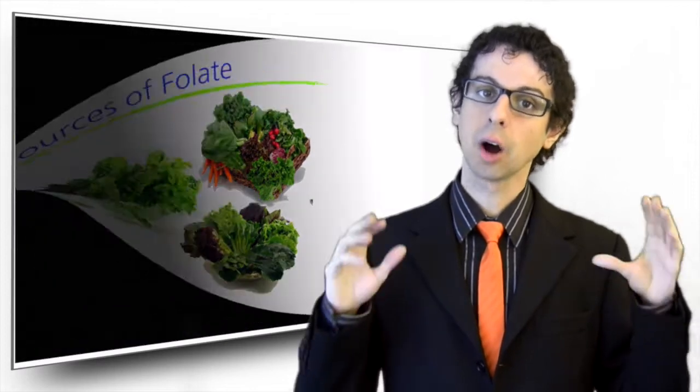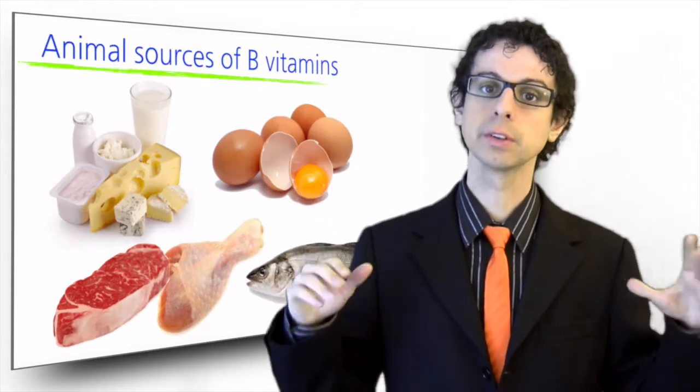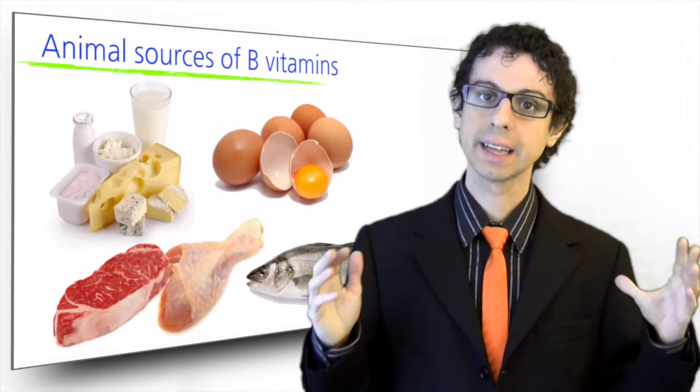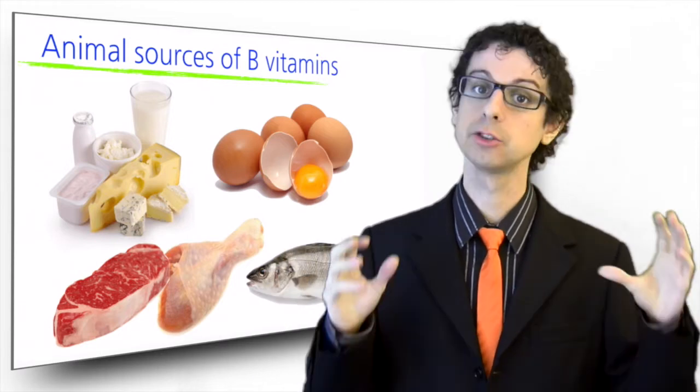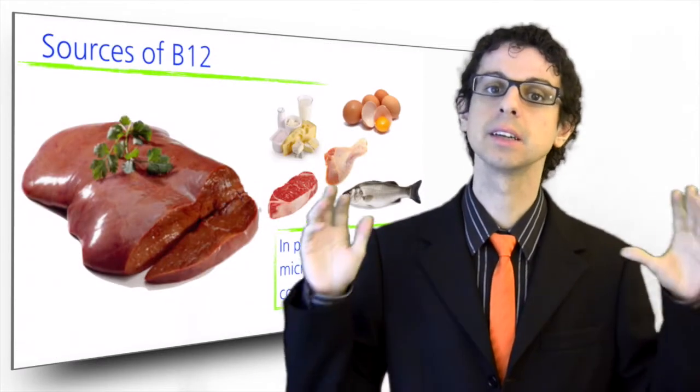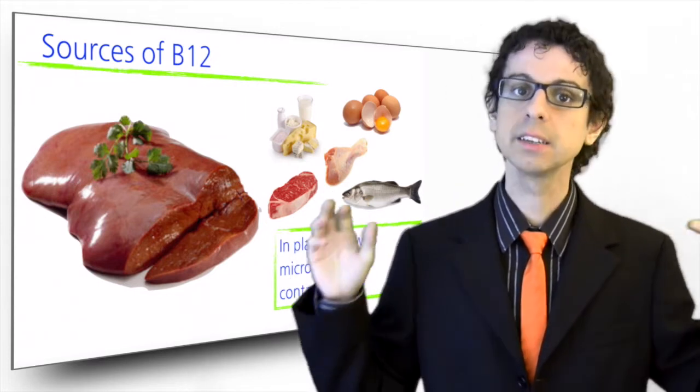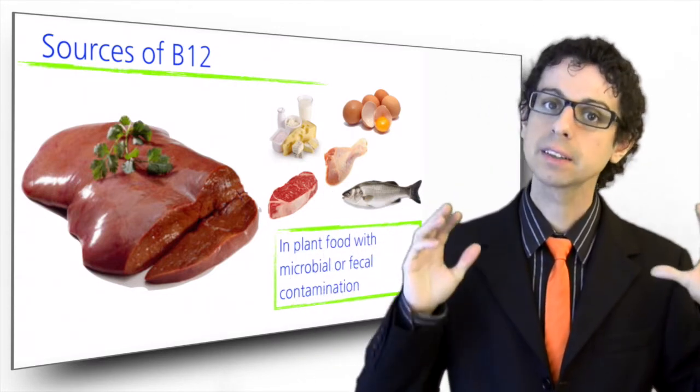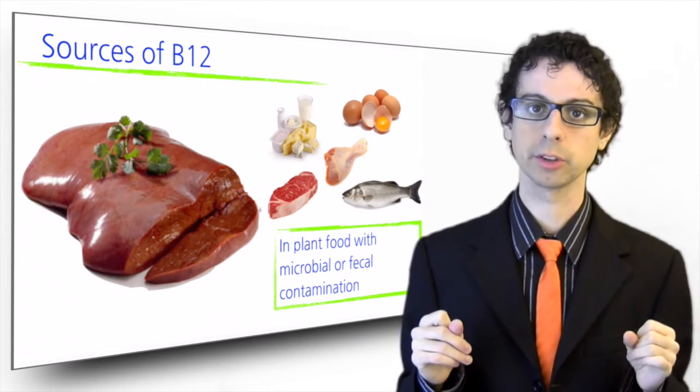Group B vitamins are also well represented in foods of animal origin: milk and dairy, eggs, meat and fish. As you already know, vitamin B12 is a little bit different, as it's an animal-only vitamin. It is mostly abundant in animal's liver, but it's present in all foods of animal origin.